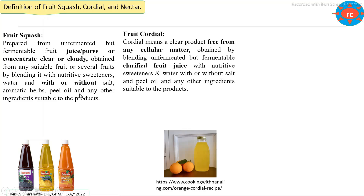The second product is fruit cordial. Cordial is the product which is made from only clear fruit juices. The fruit juice is first extracted, then clarified, and after clarification, sugar syrup is added. The basic difference between squash and cordial is that cordial is made only from clarified fruit juices, whereas squash is made directly from fruit pulp and juice without clarification.